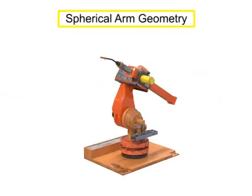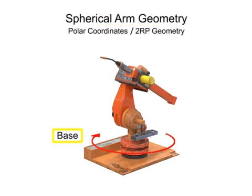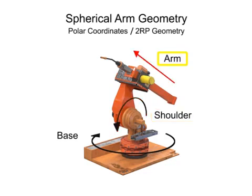Spherical arm geometry robots can rotate in two directions and move linearly in one, and thus are given the designation of R2RP. The robot has base rotation, shoulder rotation, and prismatic or linear motion at the arm.